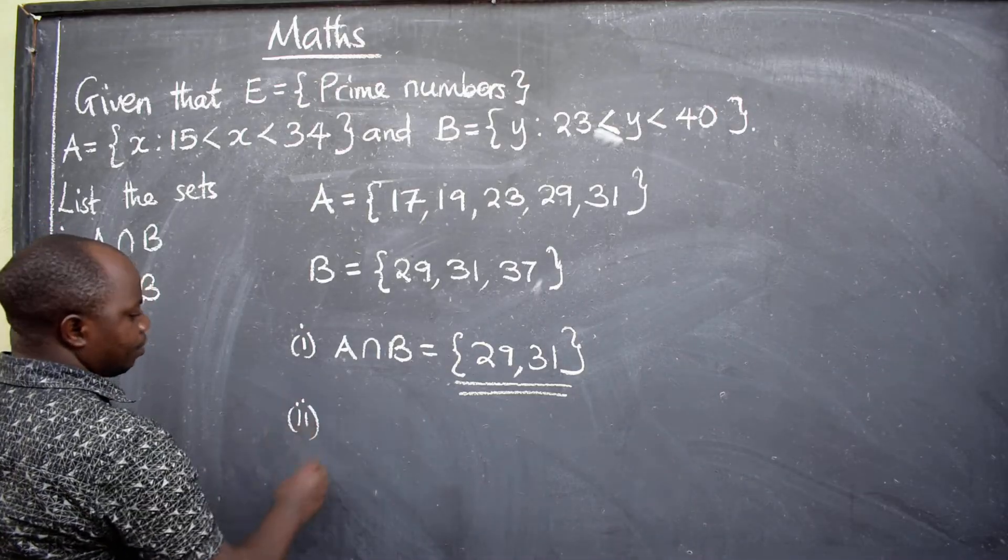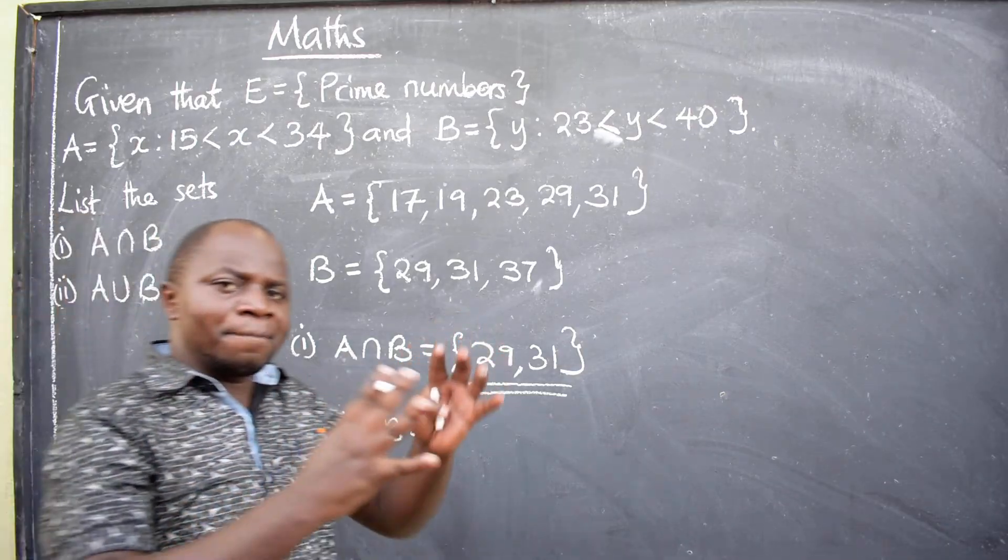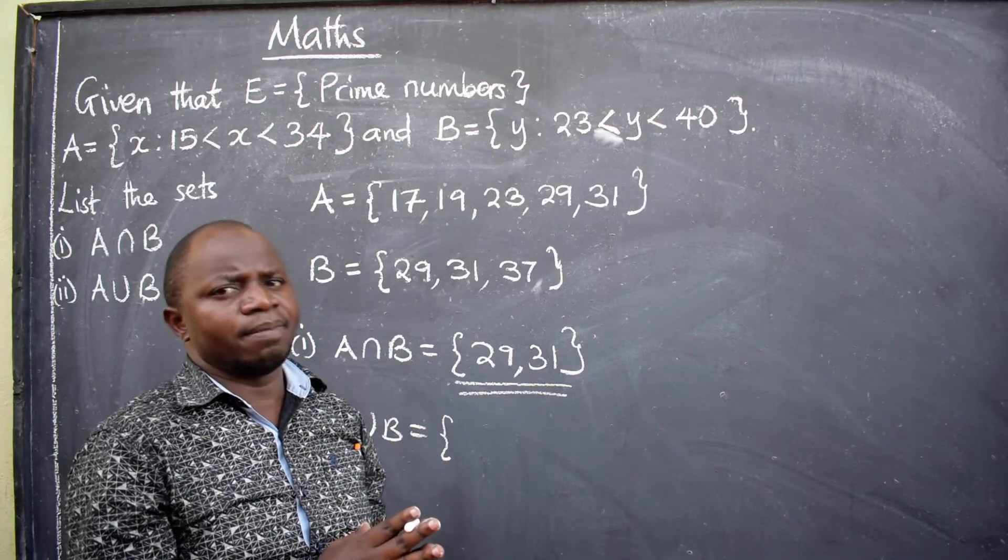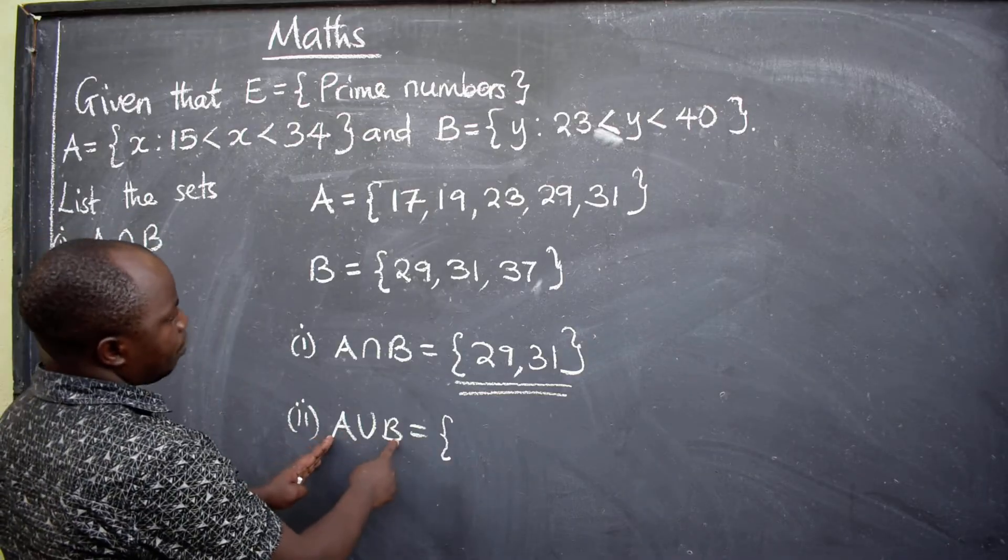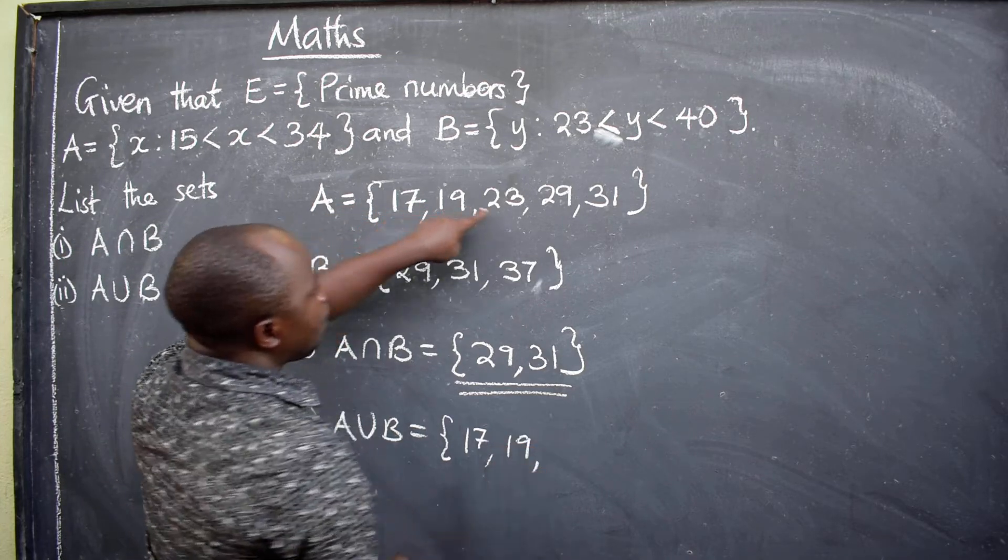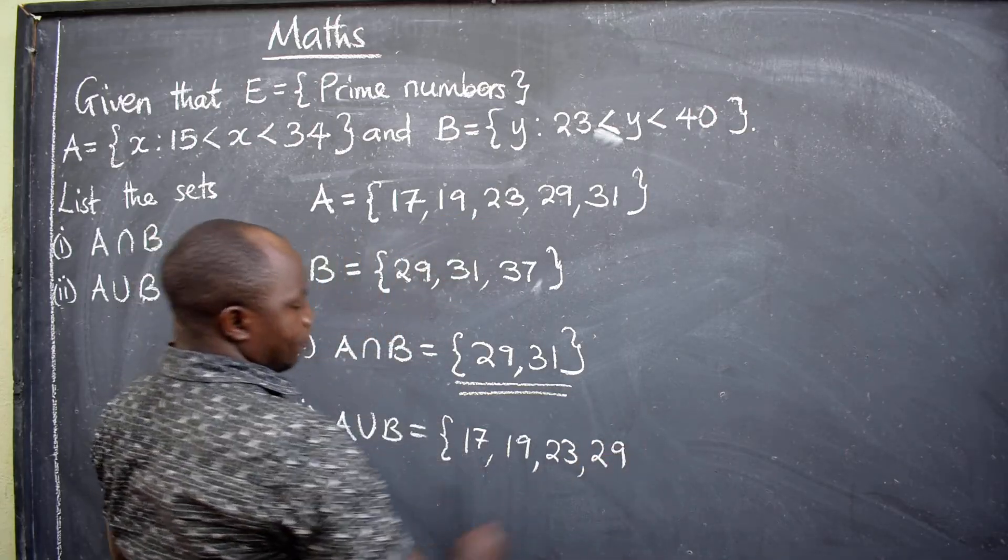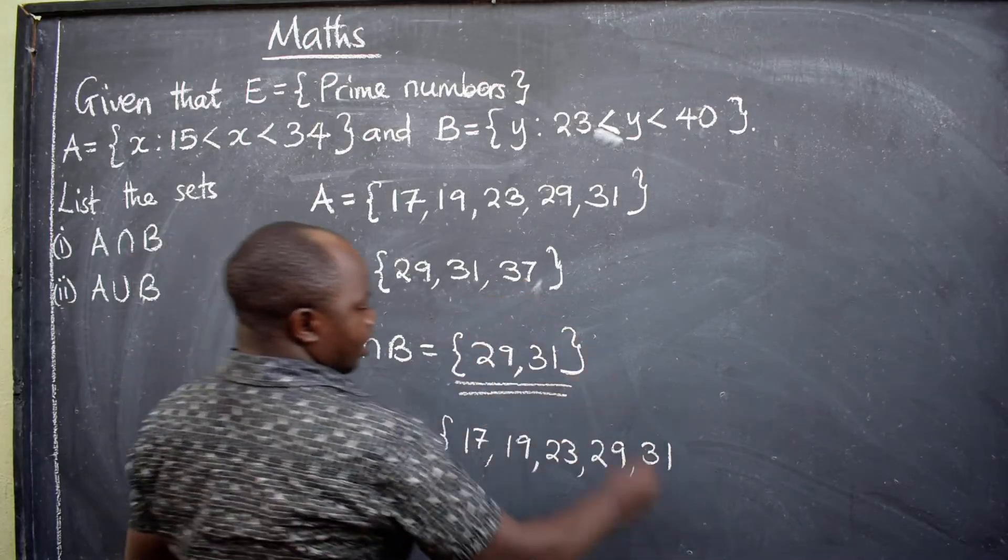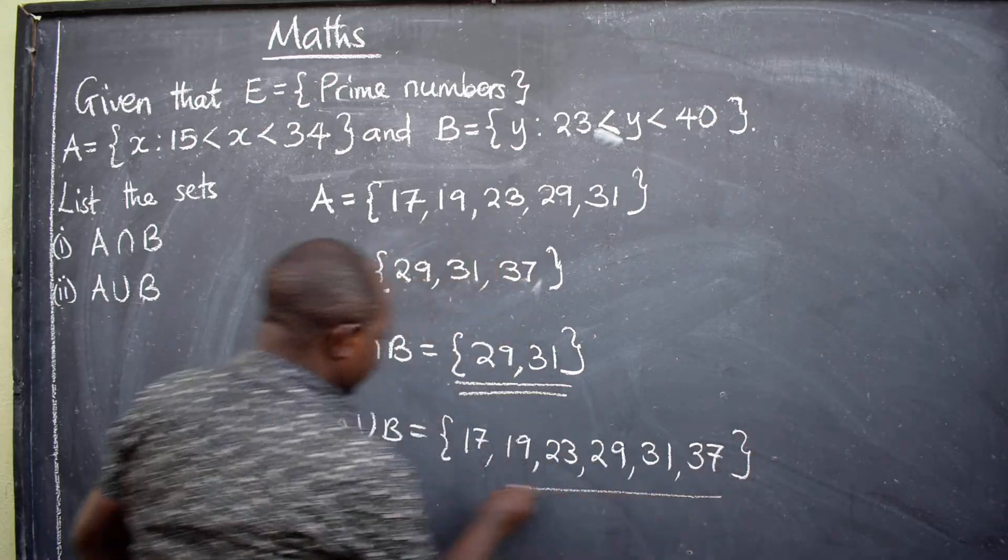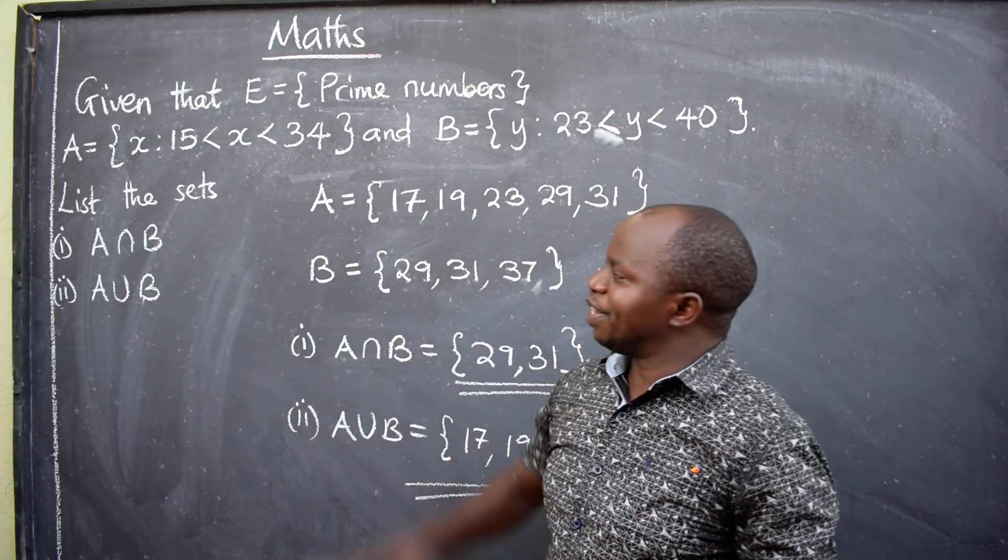Roman numeral 2, A union B. Here, union, now they are saying, put them together. A and B. Make one set. But, don't repeat elements. So, we are saying, A union B. We start 17. We have 19. We have 23. We have 29. We have 31. We have 37. So, this is the final answer. This is the way the question is supposed to be answered.